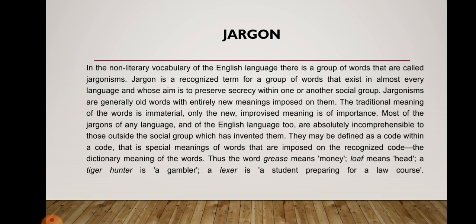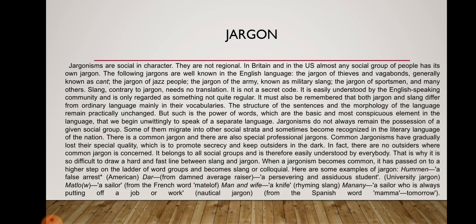For example, the word grease means money, loaf means head, a tiger hunter is a gambler, and alexa is a student preparing for a law course. Jargonisms are social in character — they are not regional. In Britain and the US, almost any social group has its own jargon. Well-known jargons in English include the jargon of thieves and vagabonds (generally known as cant), the jargon of jazz people, the jargon of the army (known as military slang), and the jargon of sportsmen.